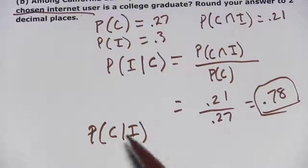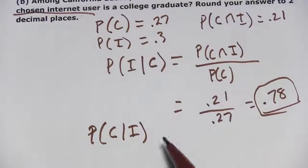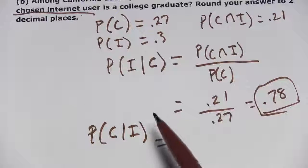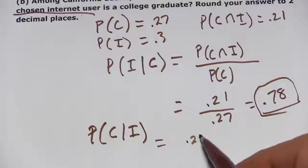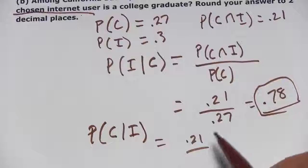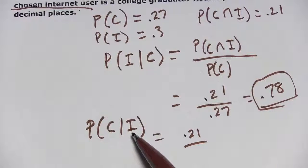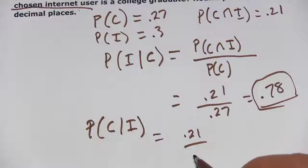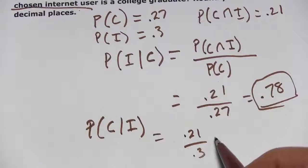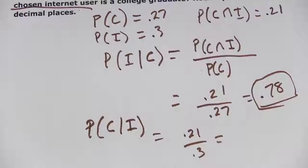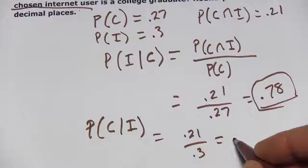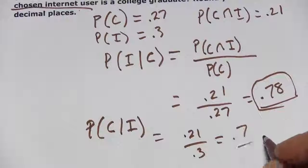So it's really the opposite of part A — instead of the probability of I given C, it's the probability of C given I. We'll do that in the same way: it's the probability of the intersection of the two, which is the same 0.21, divided by the probability of the given, which in this case is being an internet user, and that is 0.3. So 0.21 divided by 0.3 is 0.7.